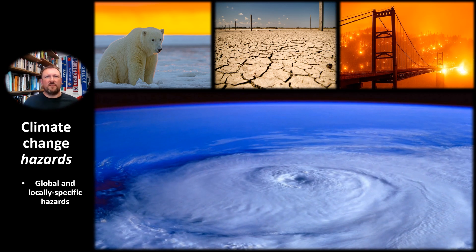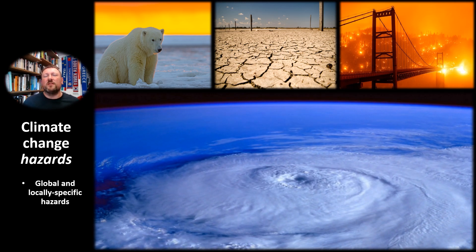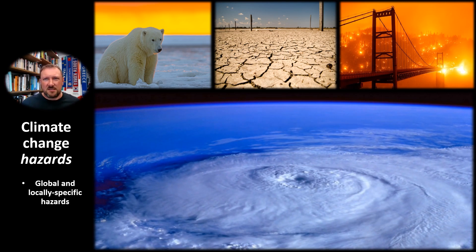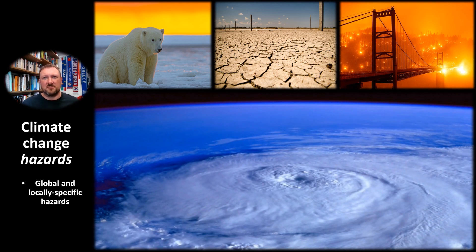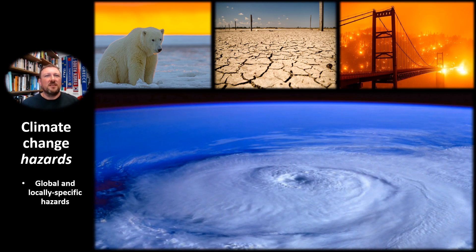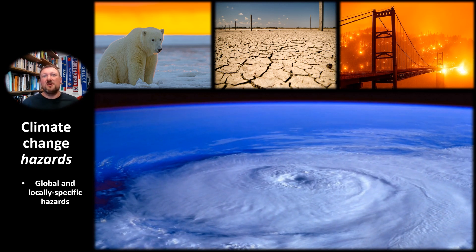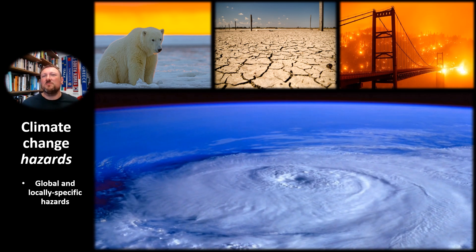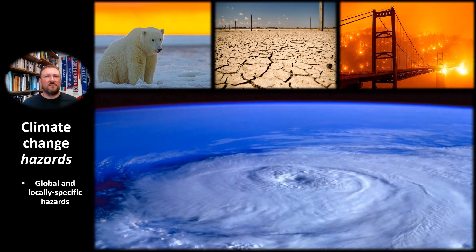Climate change impacts are the phenomena that result from, or are exacerbated by, rising average temperatures. These can include extreme weather events from changes to the hydrological cycle — storms and flooding on one hand, or droughts and bushfires on the other. It can include changes to larger weather patterns like the East Asian and Indian monsoons, the El Niño–La Niña weather pattern in the Pacific, or the Indian Ocean Dipole. It can also have a direct impact on the temperature tolerance of flora and fauna.